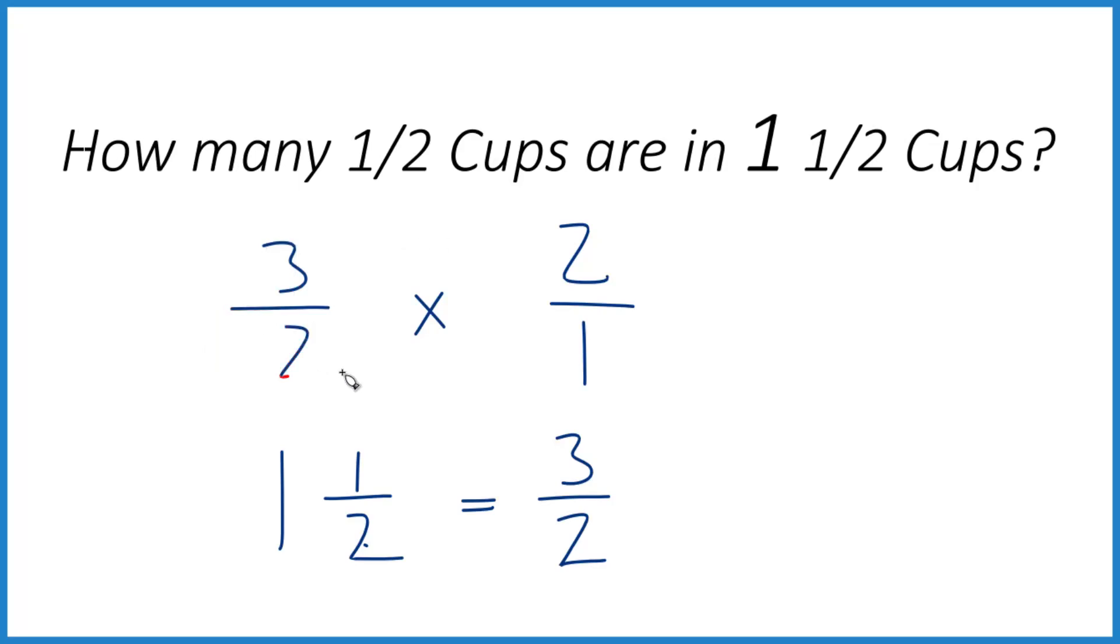So now we have three-over-two times two-over-one. Just multiply straight across. Three times two is six. Two times one is two. And six divided by two equals three, which is what we got before.